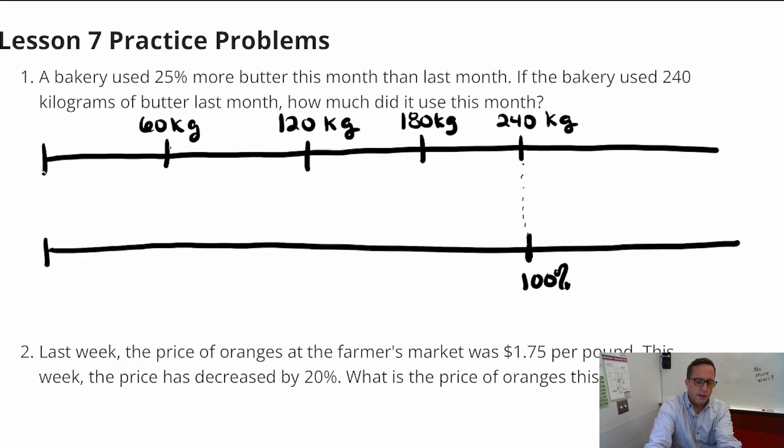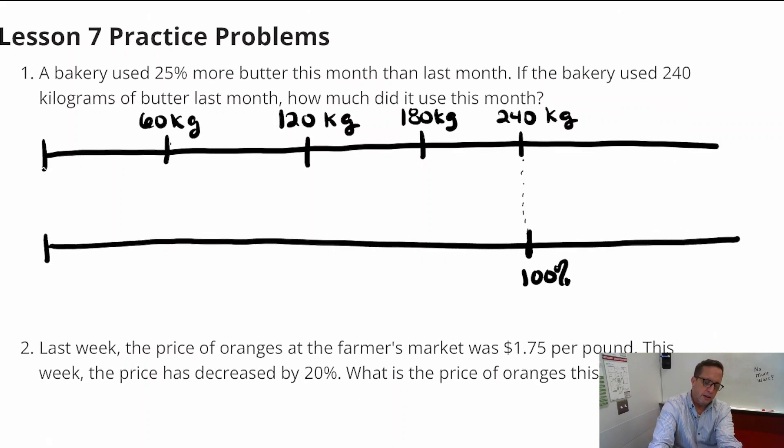And I'm going to do the same thing for this. Now the double number line, this is going to represent the percents. So I want to put 100% here. And we're just going to kind of get everything to line up. It's got 25%, 50%, 75%.